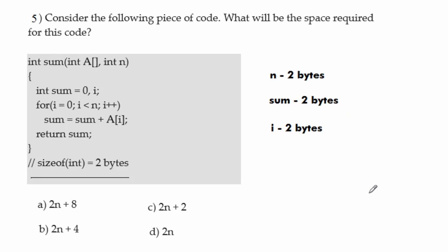An important point: the return sum statement in the code also takes 2 bytes of memory. You have to remember that a return statement also occupies 2 bytes of space. Adding 2 bytes for each of the three variables plus 2 bytes for the return statement gives 8 bytes total for fixed space, and the array takes 2n. So our answer is 2n plus 8.